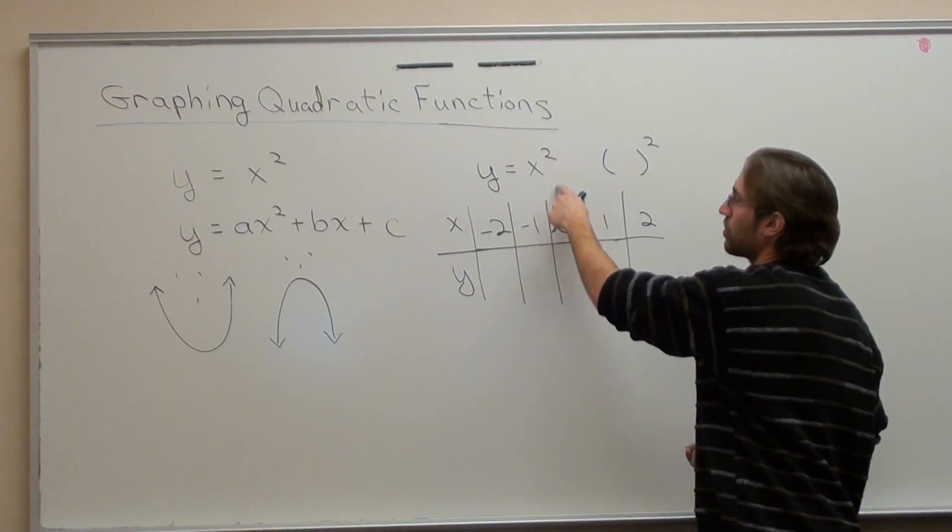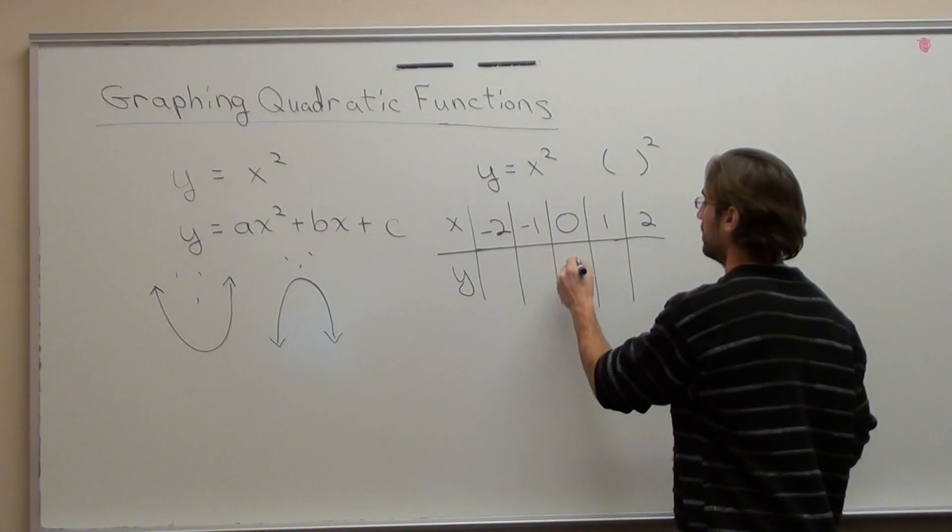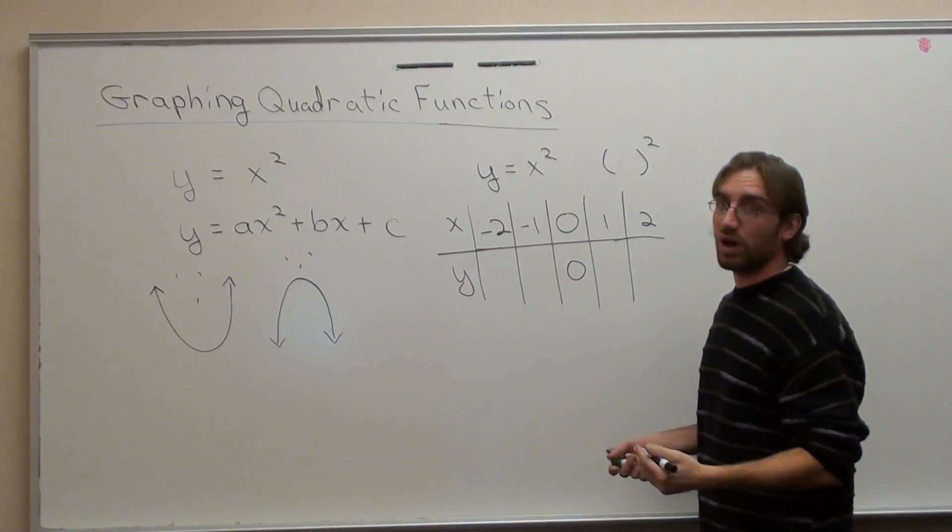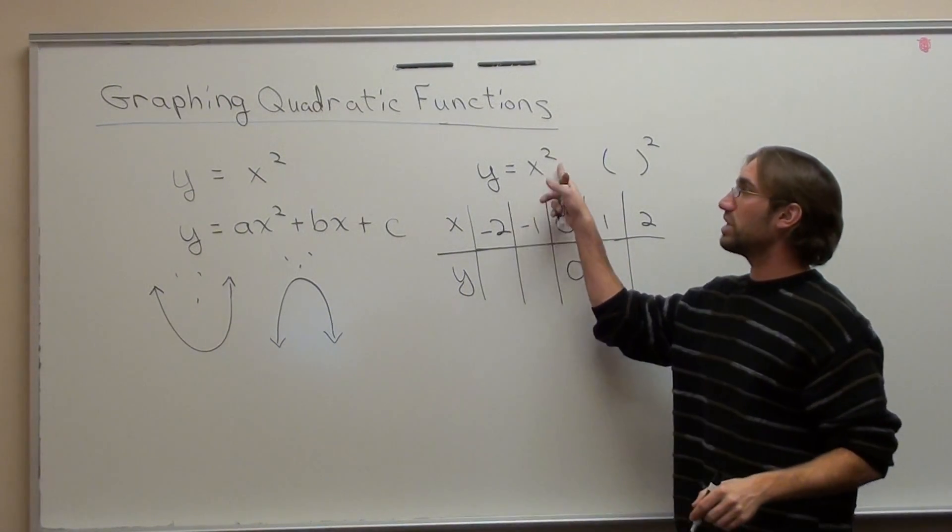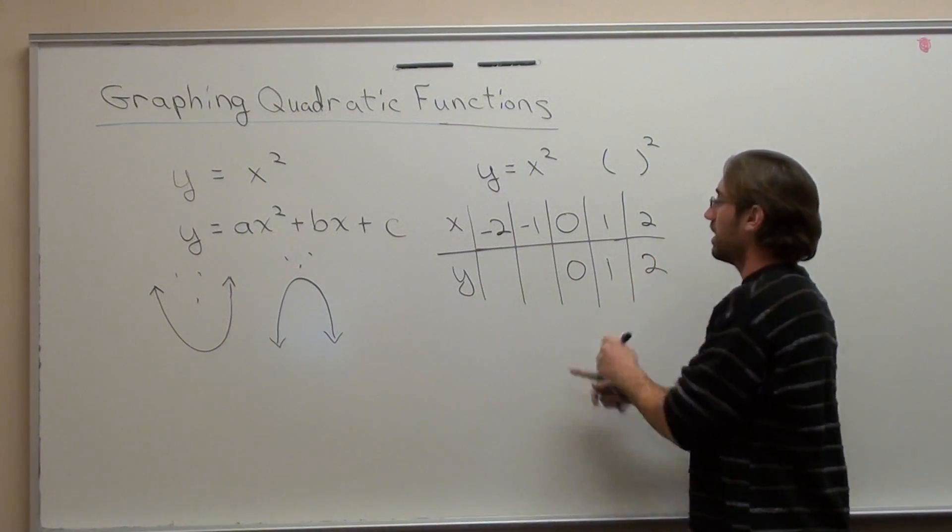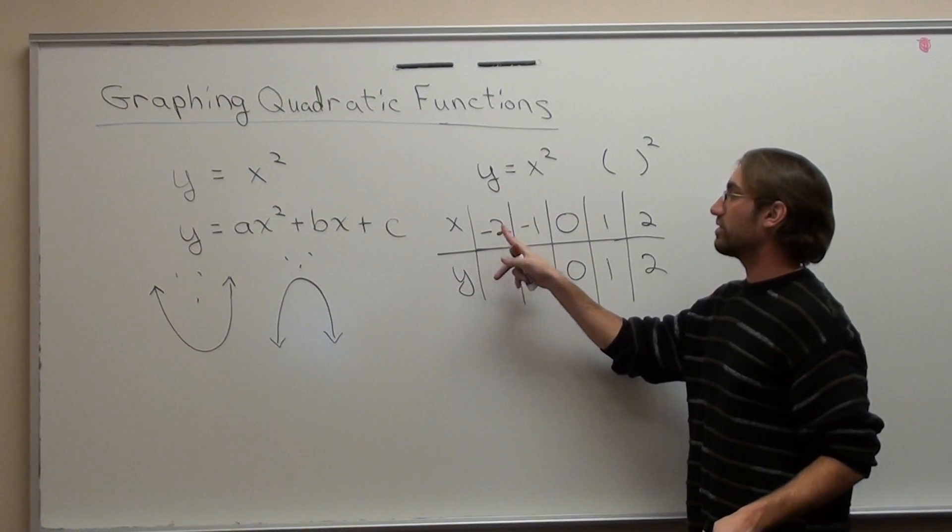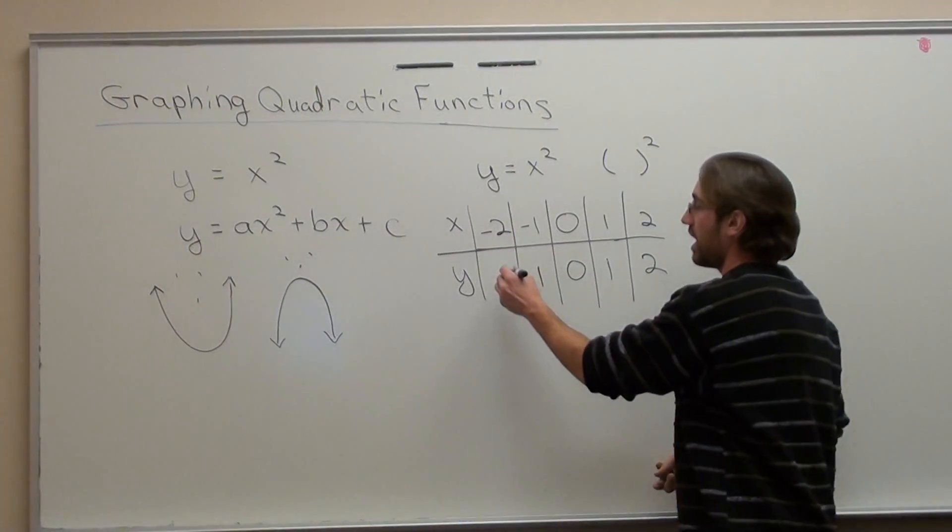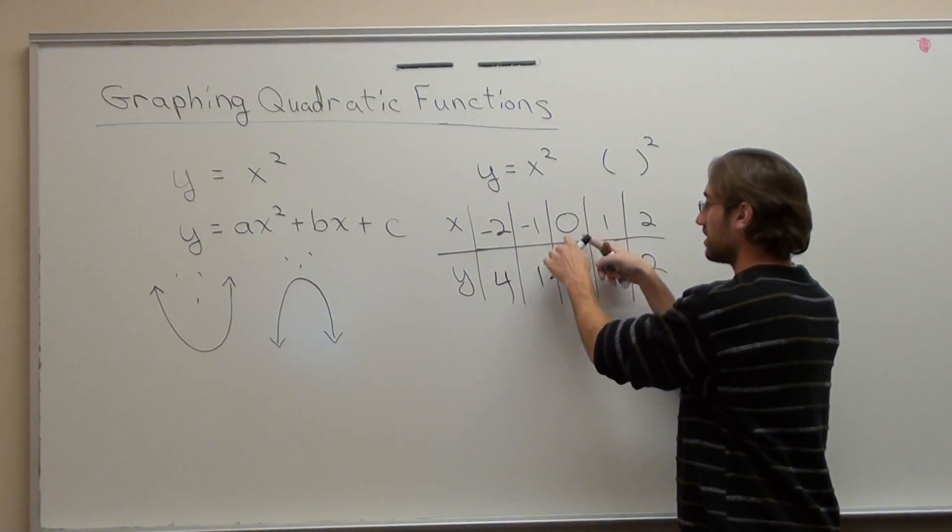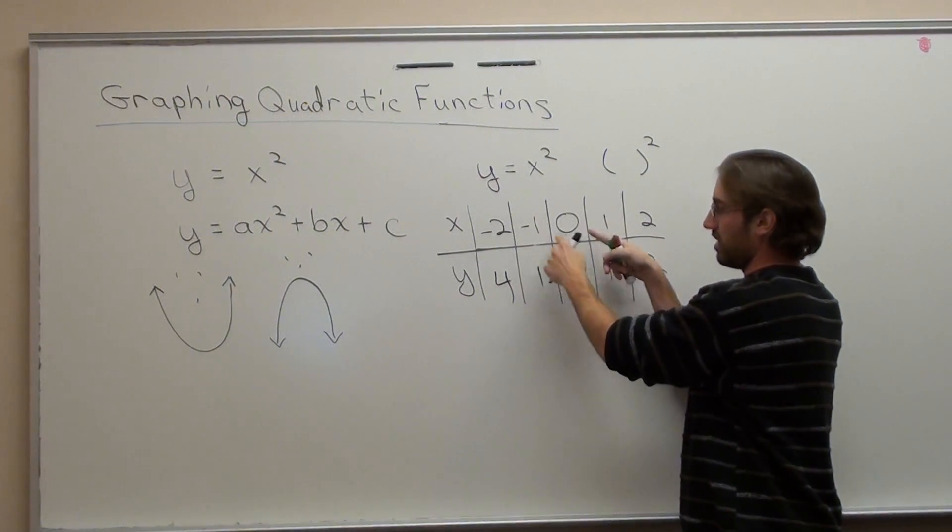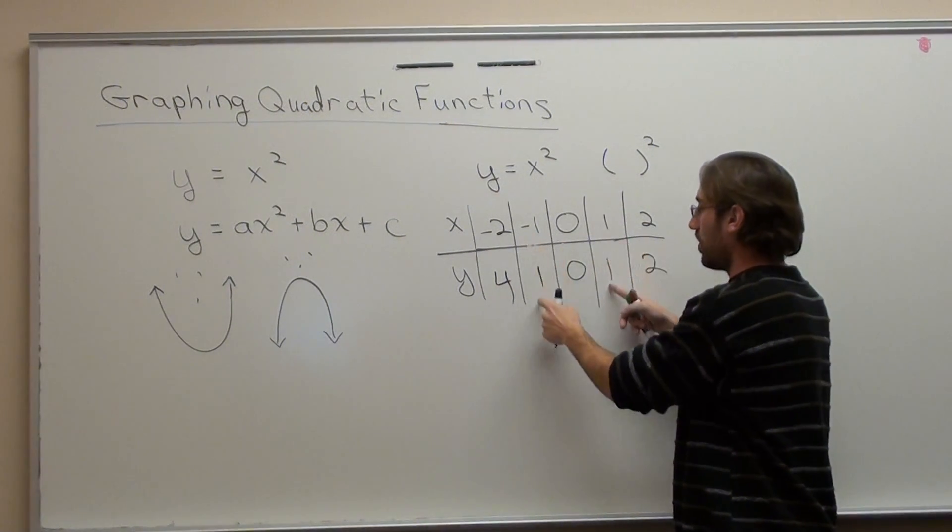So, when I substituted 0 squared, 0 times 0 is 0. 1 times 1 is 1. 2 times 2 is 4. Negative 1 times negative 1, or negative 1 squared is 1. And negative 2 times negative 2 is 4. As long as the distances correspond correctly or are equivalent on both sides, the y values will be the same.